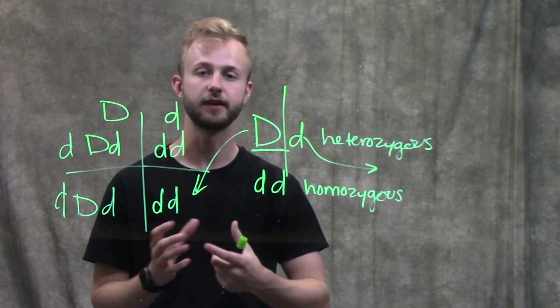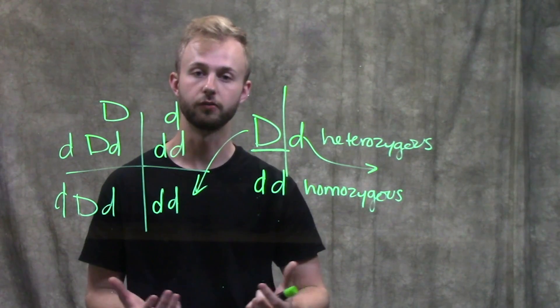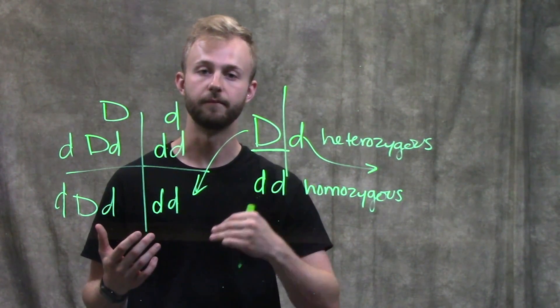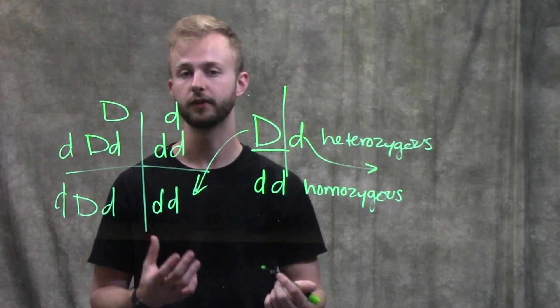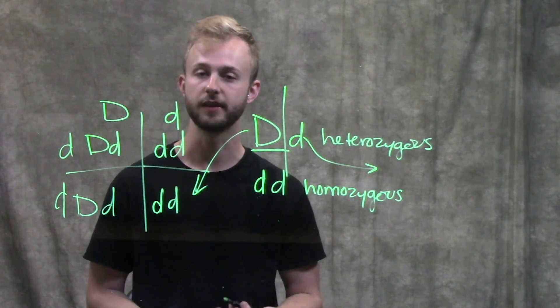If they have any dominant alleles, it should show up in the offspring. But if they have all recessive alleles, that will also show up in the offspring. It's a really good way of helping us figure out what the genotype of a particular organism is.